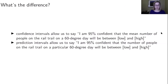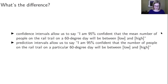What's the difference between a confidence interval and a prediction interval? A confidence interval is going to allow us to say something about the mean, and a prediction interval is going to allow us to say something about a particular observation.